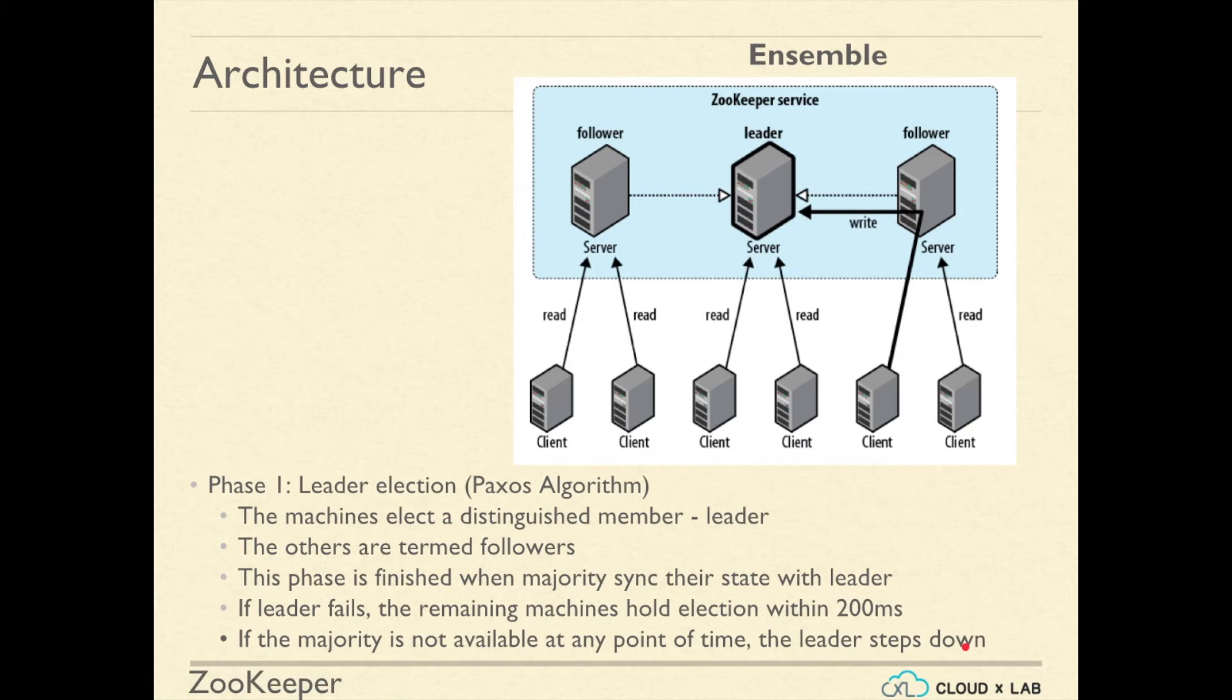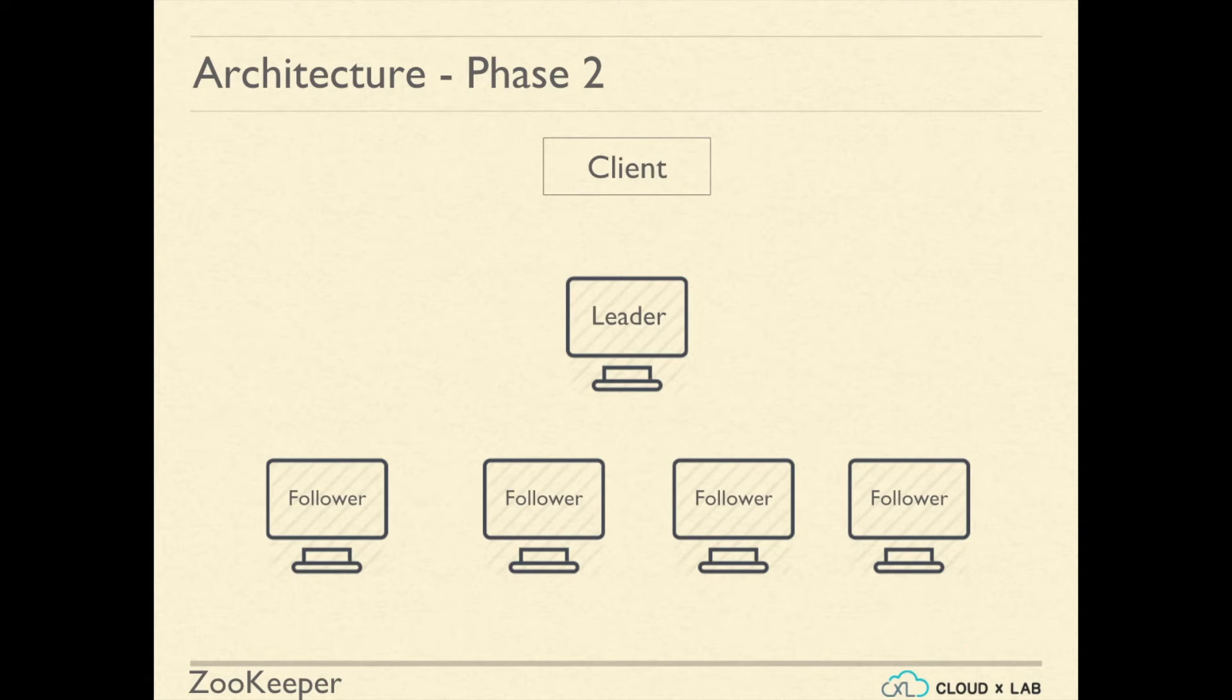The second phase is called Atomic Broadcast. Any request from user for writing, modification, or deletion of data is redirected to the leader by the followers. There is always a single machine on which modifications are being accepted.